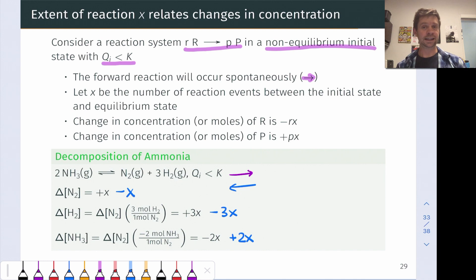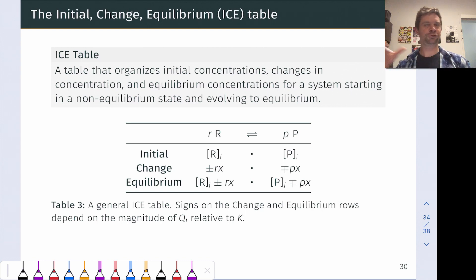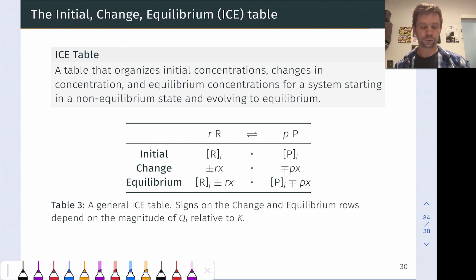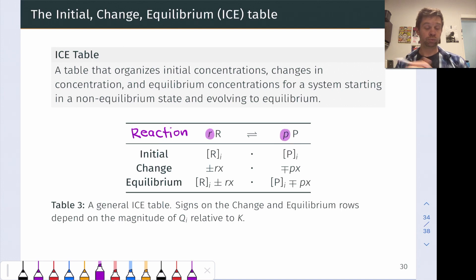We can see how the comparison of Q to K has a big impact on the signs of these changes in concentration. Comparing Q to K is critical in equilibrium calculations. Now, that's a lot of abstract math, and it's a lot to keep track of if you have more than one reactant and more than one product involved. This is why we use a device known as an ICE table to organize things. The ICE table lists the initial conditions on the first line, preceded by the reaction itself.